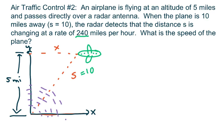So first of all, we're going to use the Pythagorean Theorem because we have a right triangle right here. So we have x squared plus y squared equals s squared.